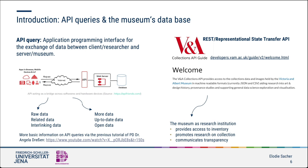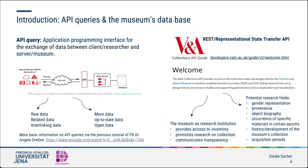A museum's database can provide meaningful information for the following research areas: provenance, gender representation, object biography, the occurrence of specific materials in certain epochs, and the history or development of the museum's collection and acquisition periods.